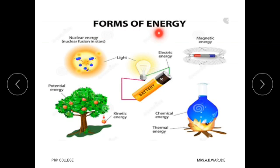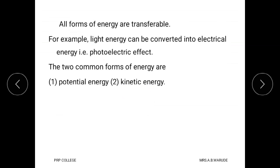This photograph shows the different forms of energy: nuclear energy, potential energy, kinetic energy, chemical energy, thermal energy, magnetic energy, light energy, and electric energy. According to the law of conservation of energy, energy is not created or destroyed, but it can be converted from one form into another. For example, potential energy into kinetic energy, electrical energy into sound energy, or thermal energy into chemical energy. Therefore, all forms of energy are transferable.